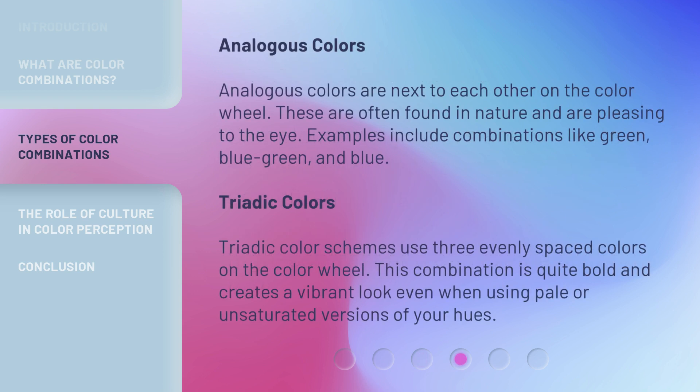Analogous colors are next to each other on the color wheel. These are often found in nature and are pleasing to the eye. Examples include combinations like green, blue-green, and blue.